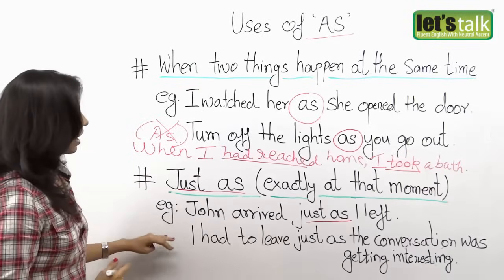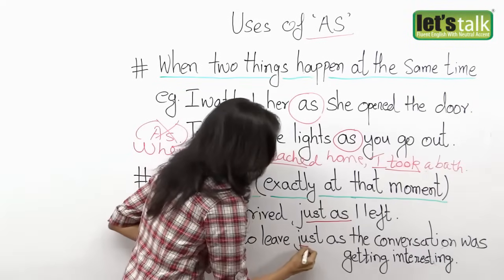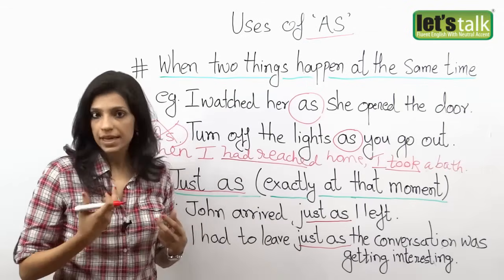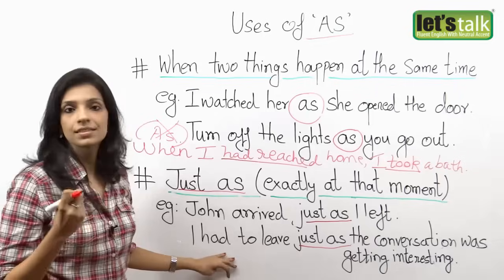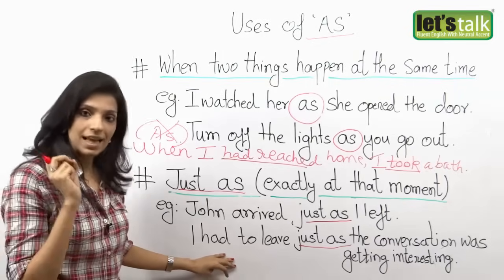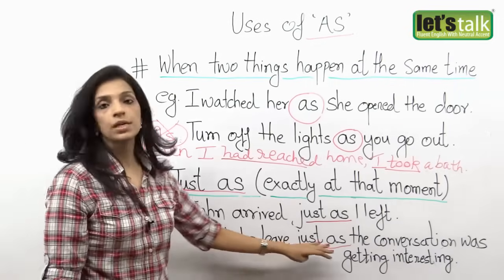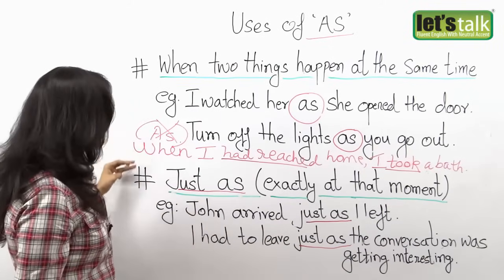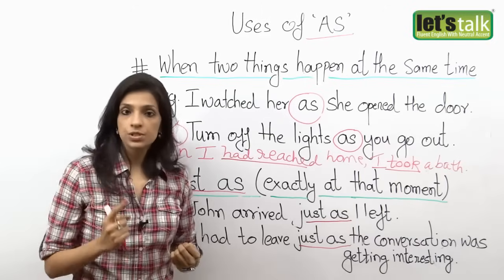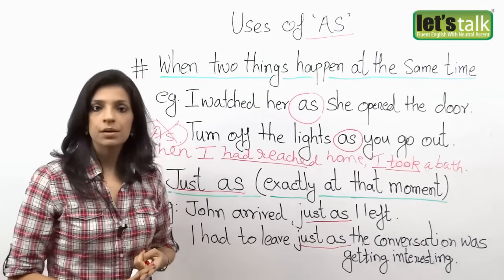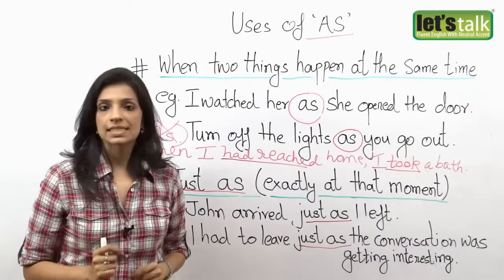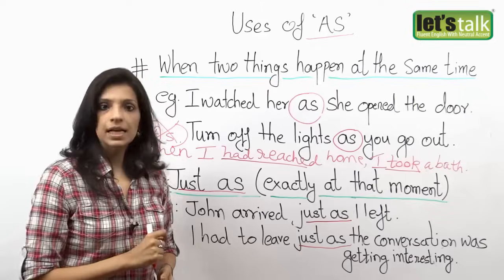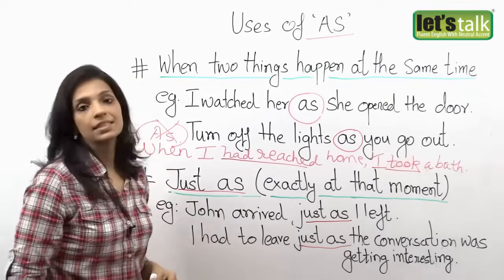In my next example: 'I had to leave just as the conversation was getting interesting.' So when the conversation began to get interesting, that is the time I had to leave — exactly at that time. So you use 'as' when two things happen at the same time, or 'just as' when you want to say something happened exactly at that moment.